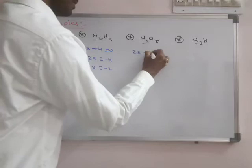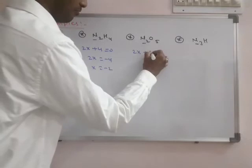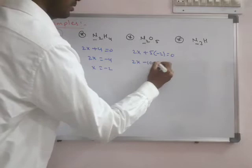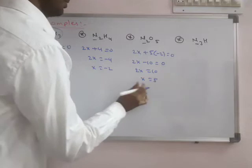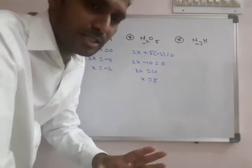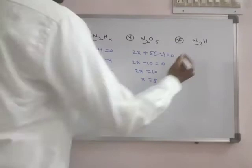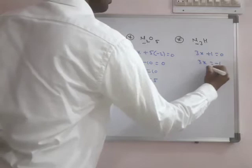In N2O5: two nitrogen 2x, five oxygens with minus two each. Generally oxygen has minus two. Overall charge is zero, so 2x plus 5 into minus 2 equals zero, giving x equals plus five. This is the maximum oxidation number of nitrogen because nitrogen has five valence electrons.